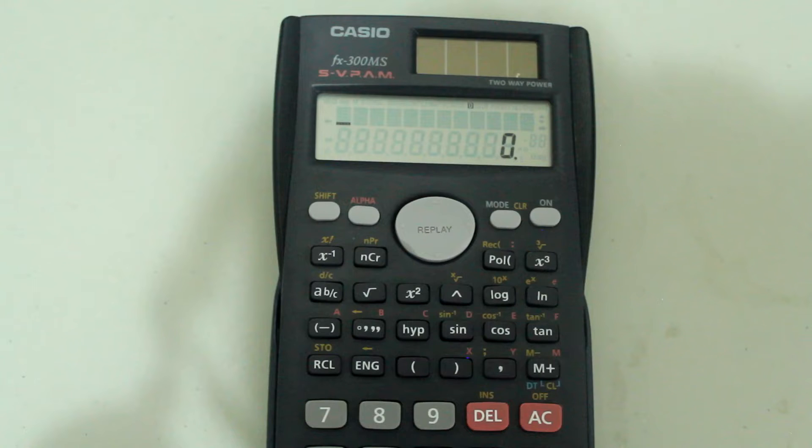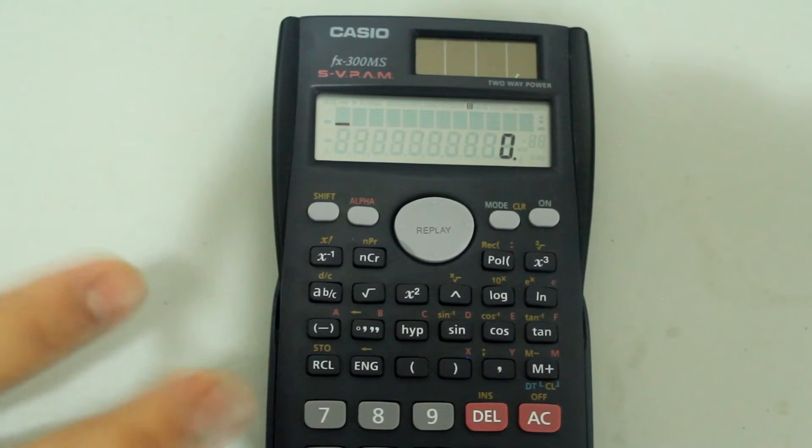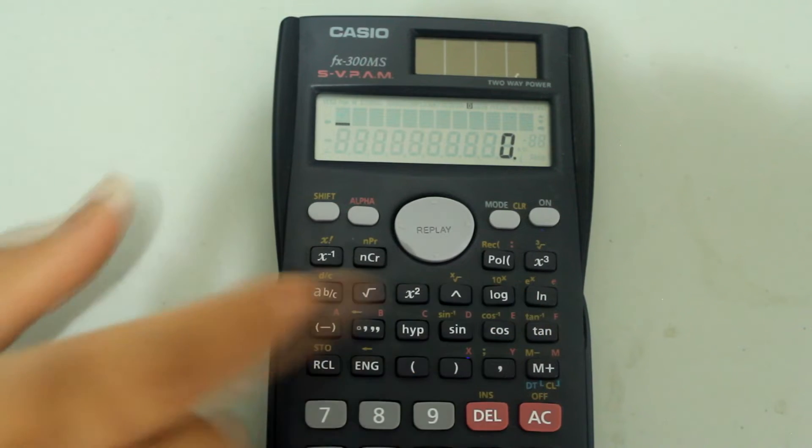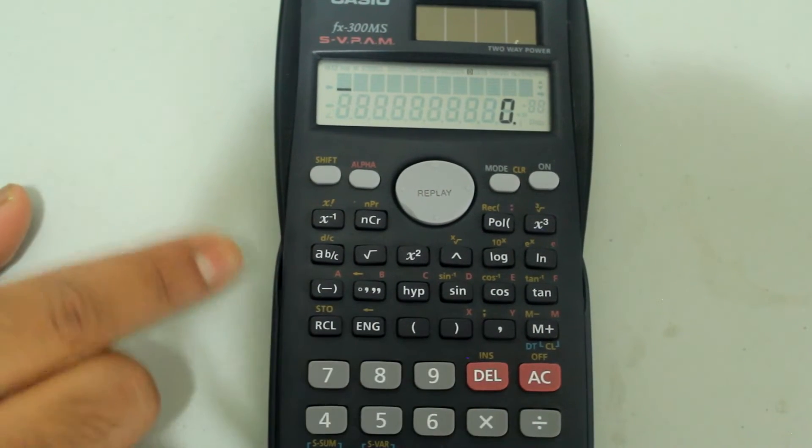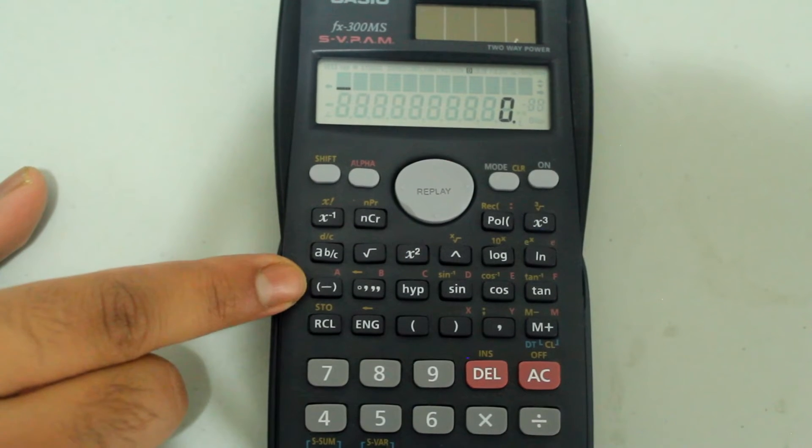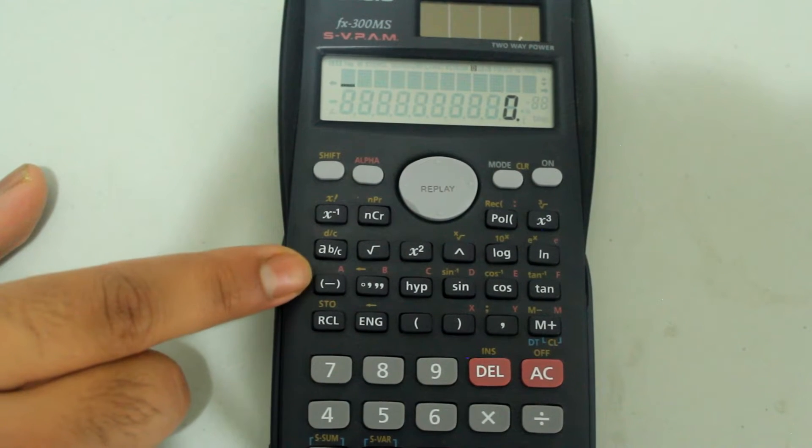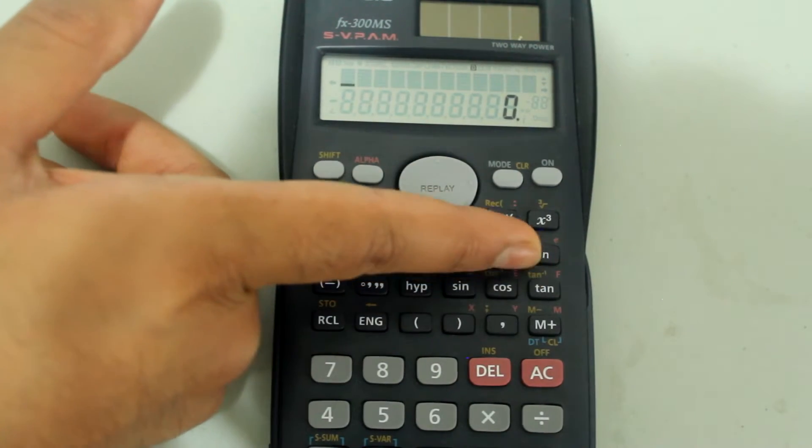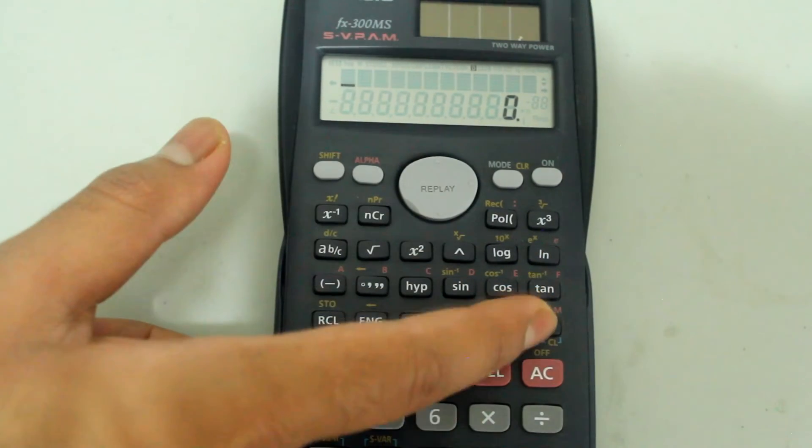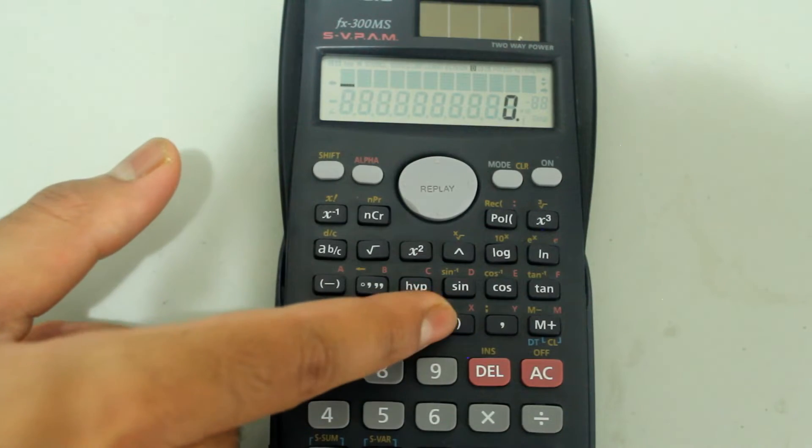When saving values on your Casio scientific calculator, you can assign them a letter either A through F, M, Y, or X, and I am referring to the letter above the buttons that's in red. So we have A over the negative sign up to F over the tangent sign, and then we have M, Y, and X.